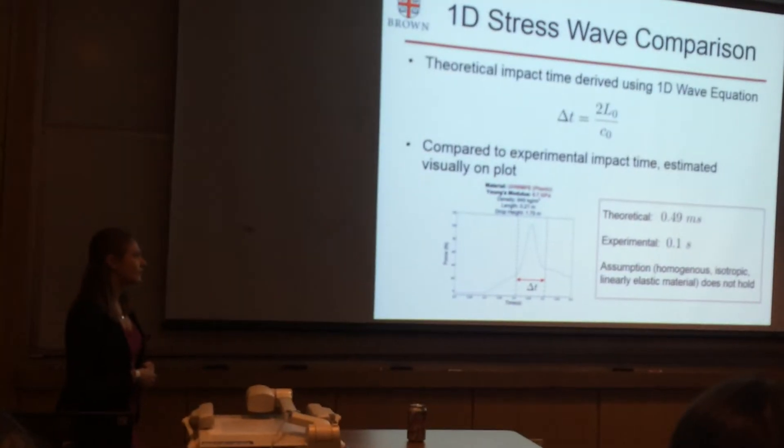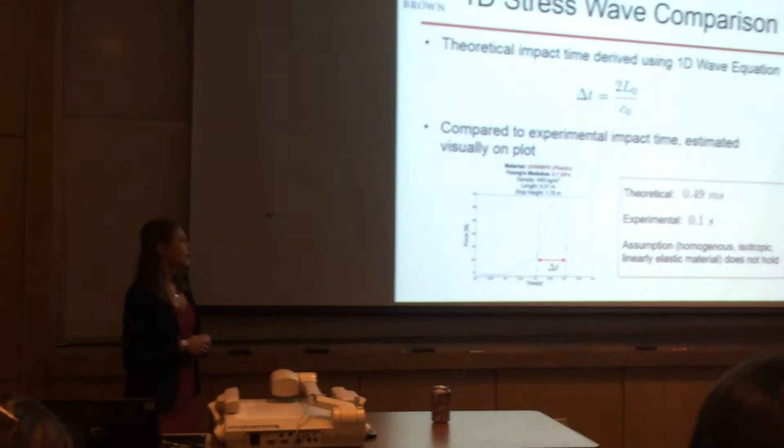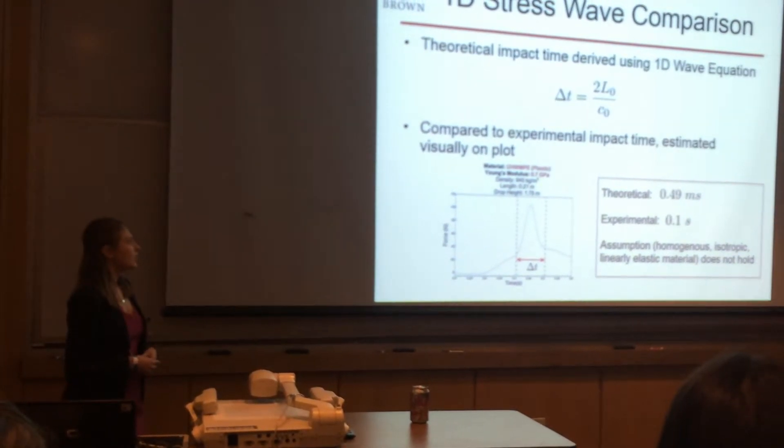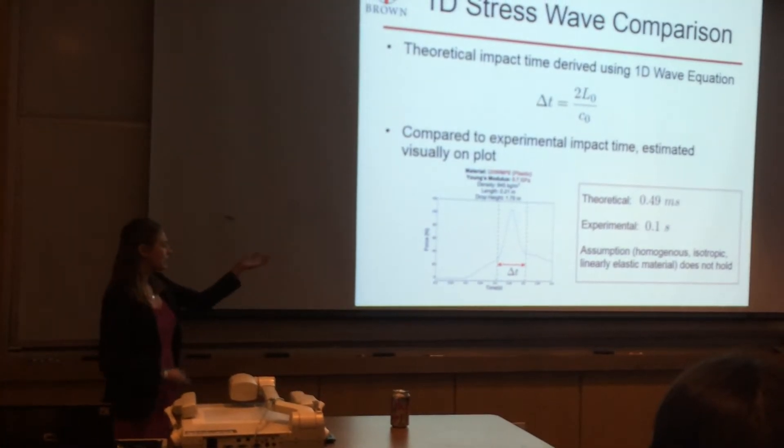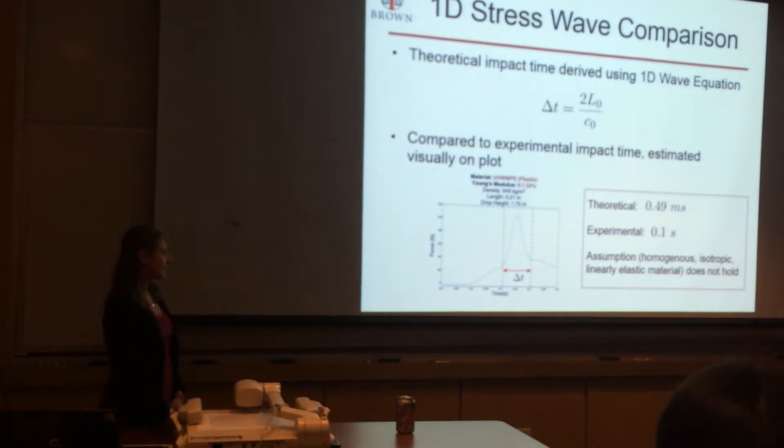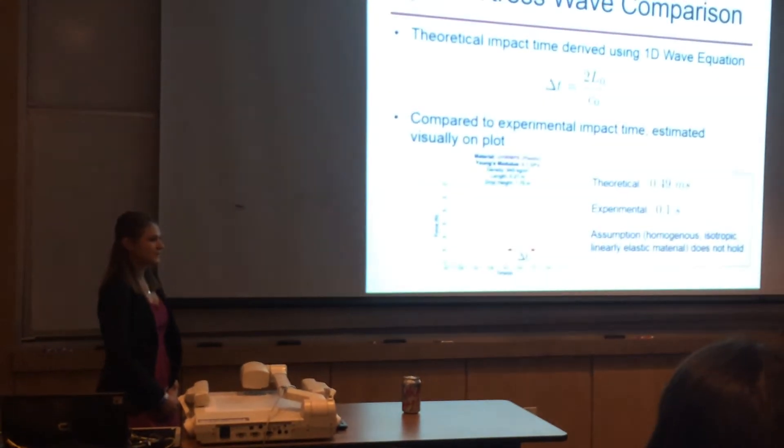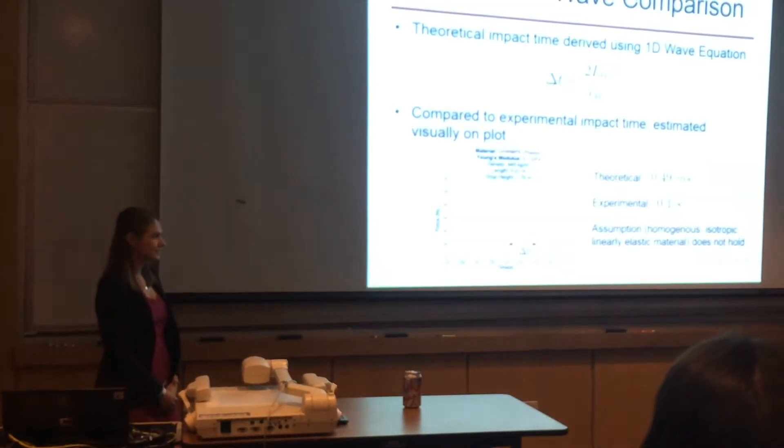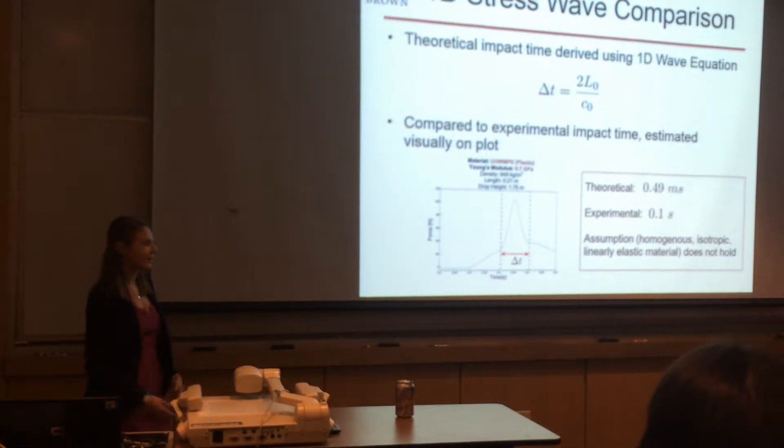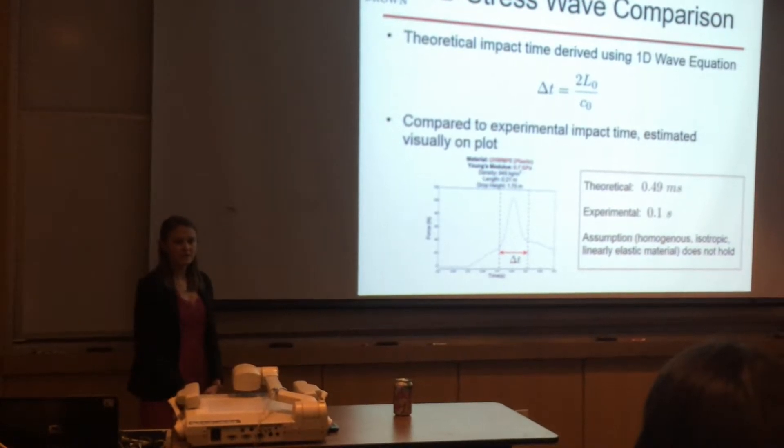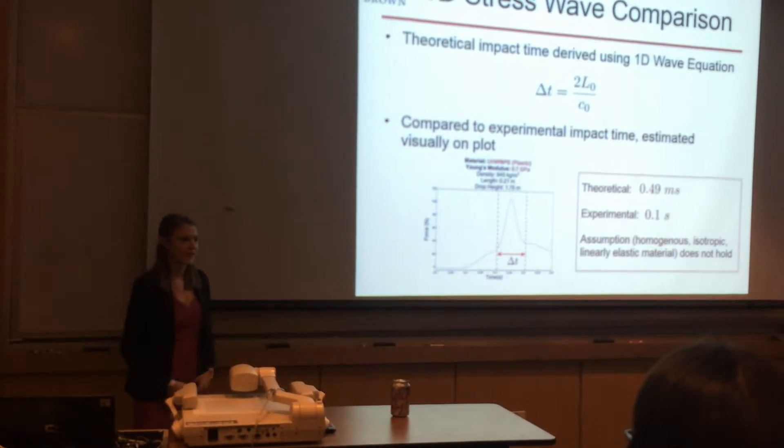Next I wanted to observe the 1D stress waves in the system by comparing the theoretical and experimental impact times. The theoretical impact time as shown in the equation above was derived using the 1D wave equation and the experimental impact time was estimated visually on the plot as shown by the delta t on the diagram. I got a theoretical impact time for this particular bar to be 0.49 milliseconds and the experimental was much larger at 0.1 seconds. Clearly these two values do not line up so that led me to believe that my assumption that they were homogenous, isotropic, linearly elastic materials was not valid and did not hold.